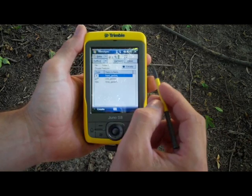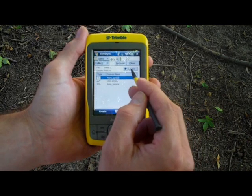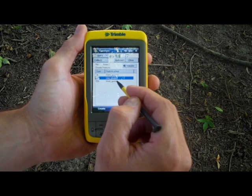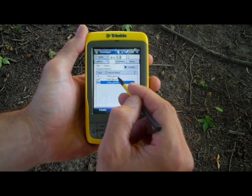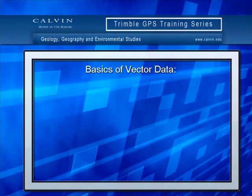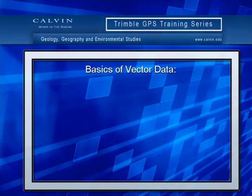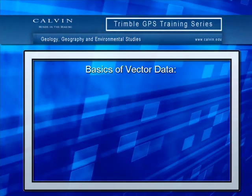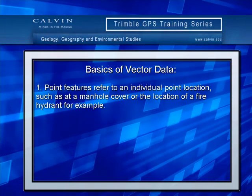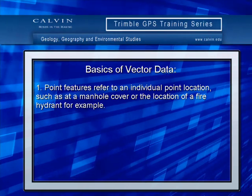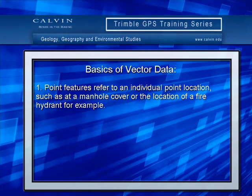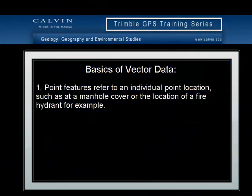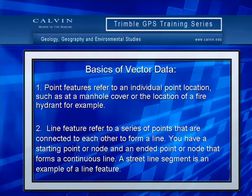Notice your screen has three generic feature types: points, lines, and polygons. Let's go over the basics of each one of these. Point features refer to an individual point location, such as a manhole cover or the location of a fire hydrant, for example.